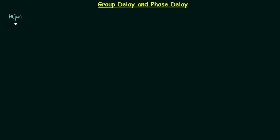H(jω), also known as the frequency response, can be written simply as H(ω). It was equal to k times e raised to the power minus jωT0, where k is a constant, T0 is the delay, and ω is the angular frequency. T0 is the delay provided by the LTI system to all the different frequency components.